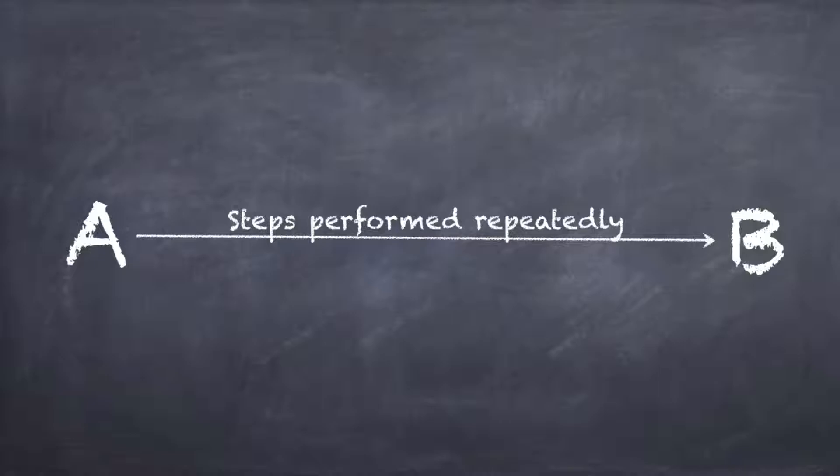For example, A may be the number 1 and B may be 10. The step you need to perform is maybe addition—you can add 1 to state A. In 10 steps you will reach state B, which is 10: 1 plus 1 equals 2, plus 1 equals 3, plus 1, and so on. Ultimately you will reach state B. This is just an example.